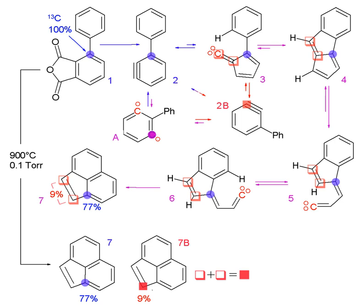Radioisotopic labeling is a technique for tracking the passage of a sample of substance through a system. The substance is labeled by including radionuclides in its chemical composition. When these decay, their presence can be determined by detecting the radiation emitted by them. Radioisotopic labeling is a special case of isotopic labeling.